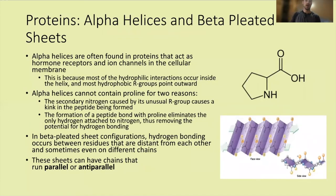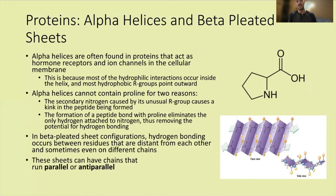Alpha helices are often found in proteins that act as hormone receptors and ion channels in the cellular membrane — those transmembrane proteins. This is because most hydrophilic interactions occur inside the helix while hydrophobic R groups point outward, allowing the helix to embed in the hydrophobic membrane environment. When in an aqueous environment, hydrophobic R groups fold inward and hydrophilic groups point outward — the lowest energy conformation.